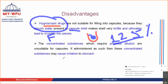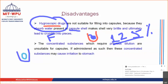Also, concentrated substances cannot be added into capsules. With tablets, you can dissolve or dilute them in water before consumption — dilution is possible with tablets and liquids, such as gargles. But with capsules, dilution is not possible. Hence, if concentrated substances are taken in capsule form, they may cause irritation to the stomach.